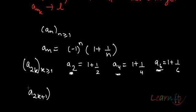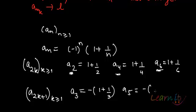That will be a_2k+1 where k ≥ 1. That will give you a_3 = -(1 + 1/3). Similarly, you will have a_5 = -(1 + 1/5), and so on. These terms will be like this.